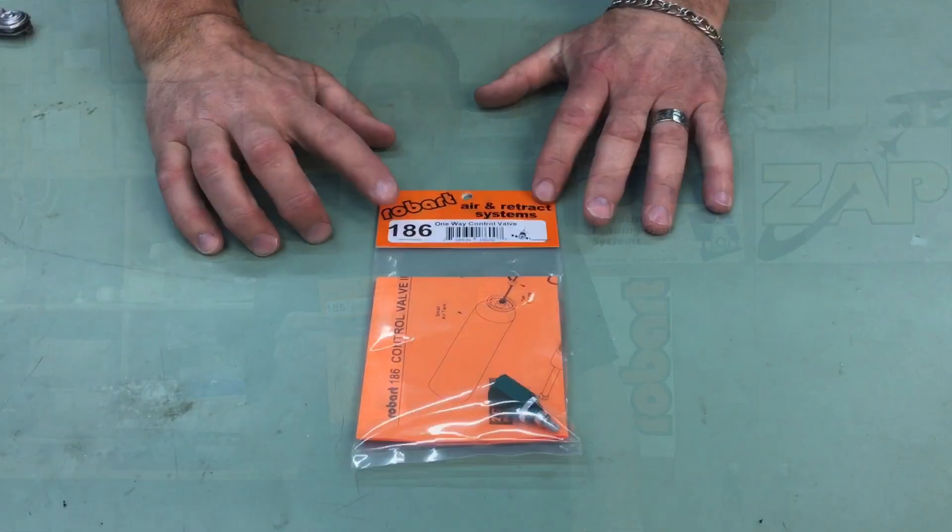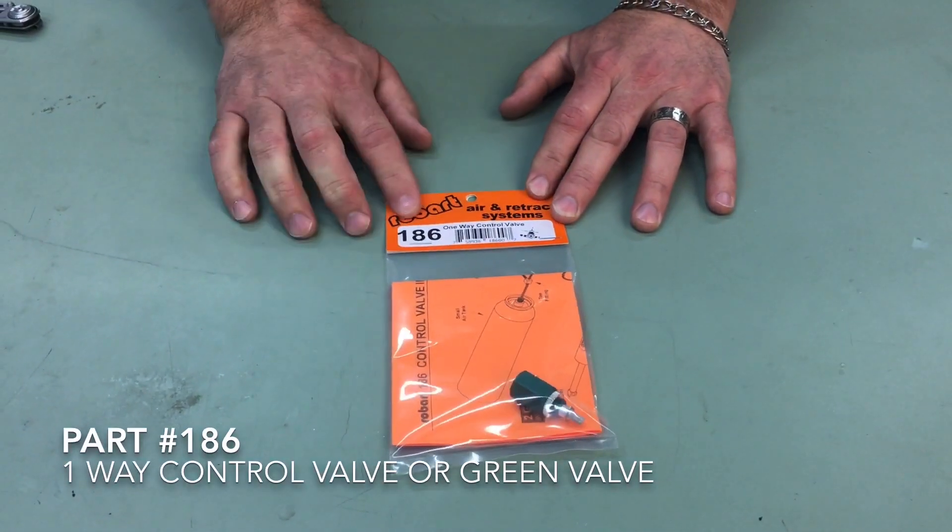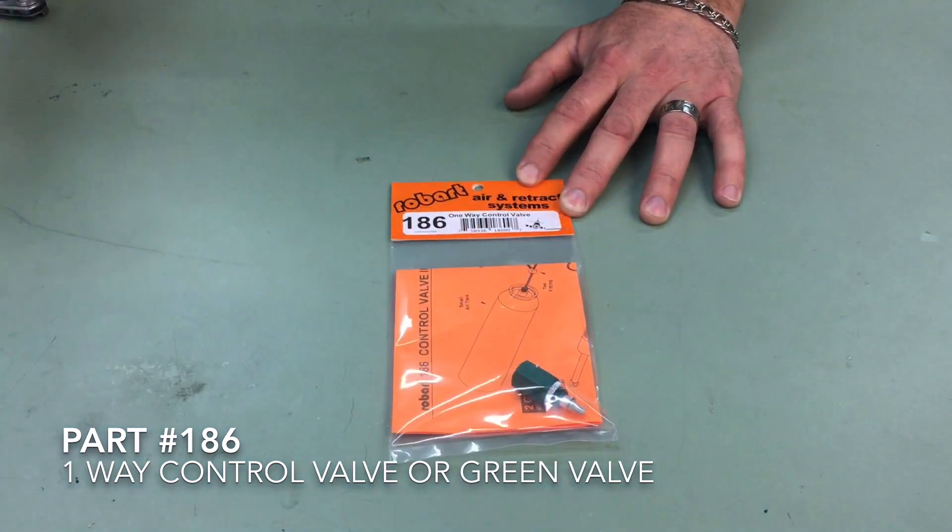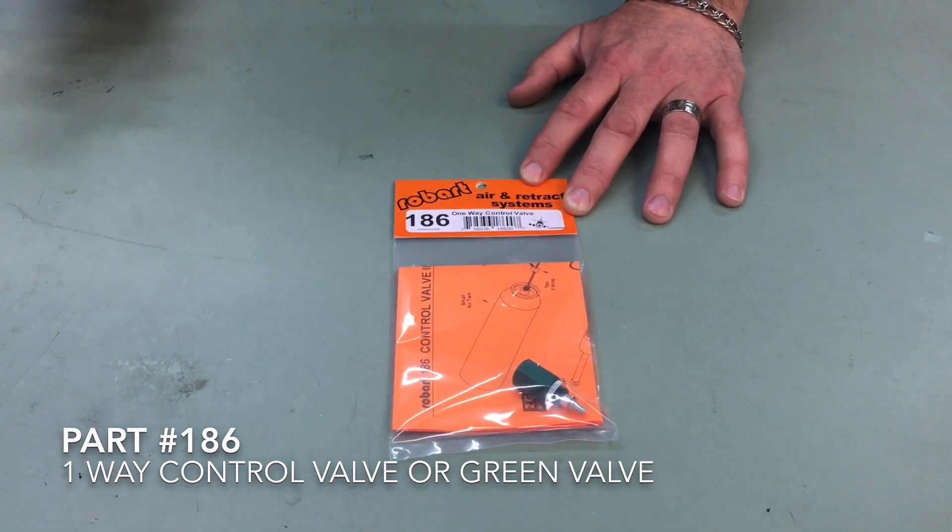Hi everyone, Mike here from Robart and today we're going to be talking about part number 186. This is the green valve from Robart. So what we have here is our one-way control valve. This is part number 186 or affectionately known as the green valve.